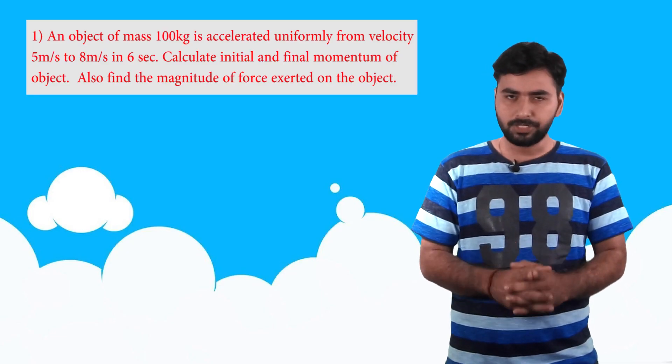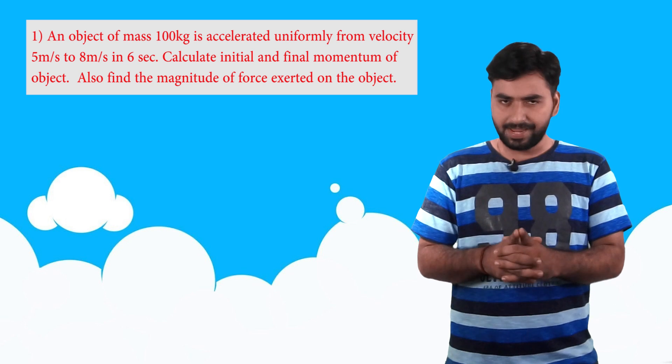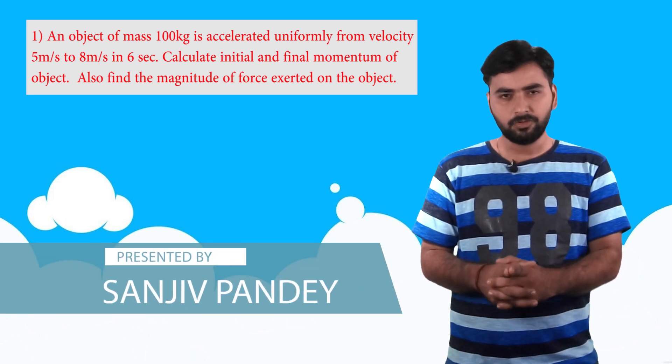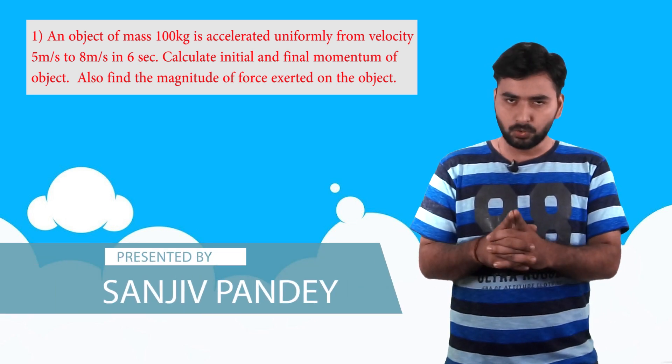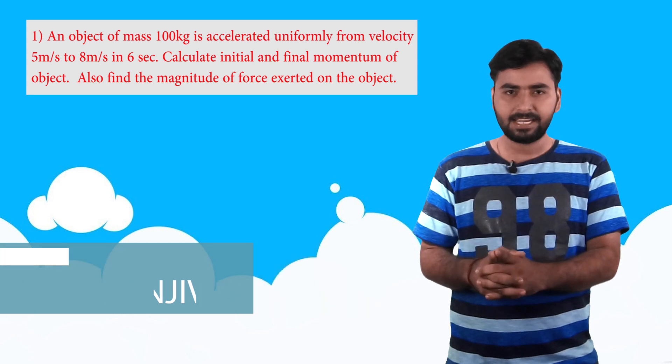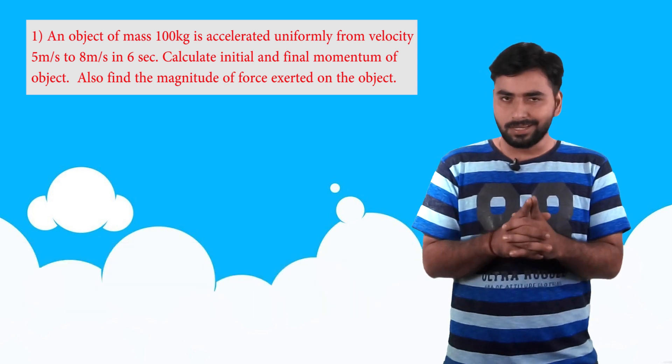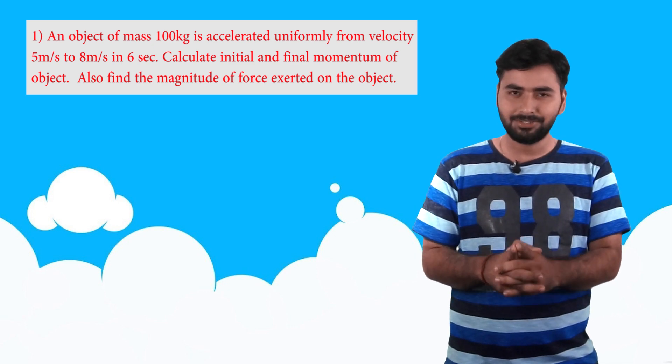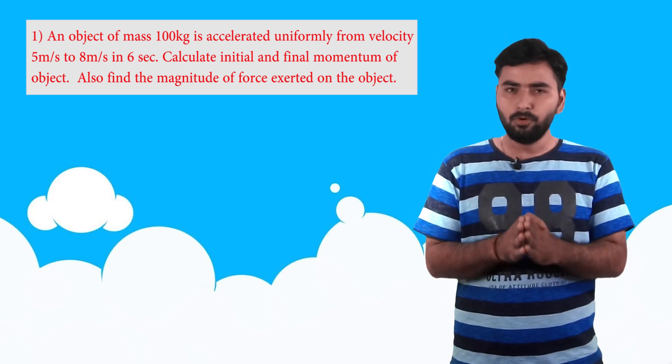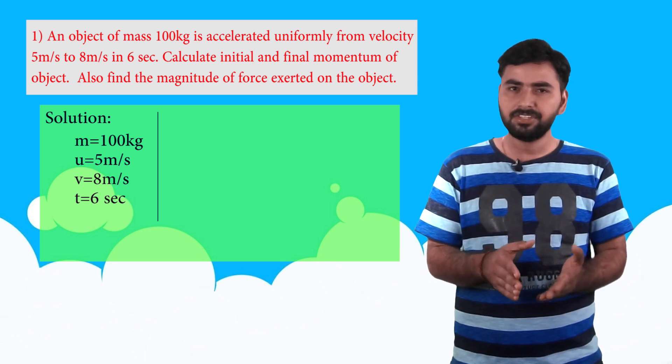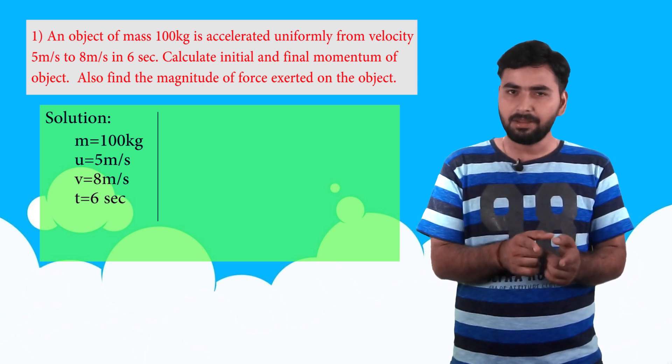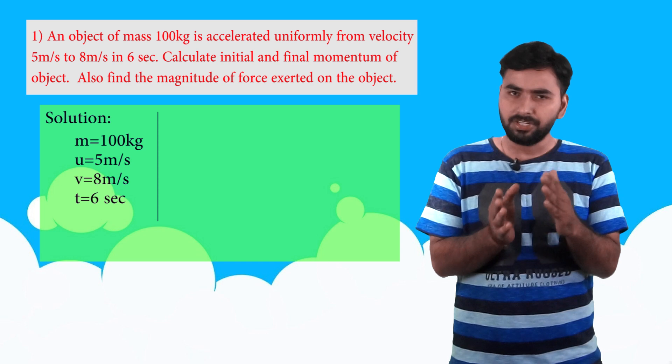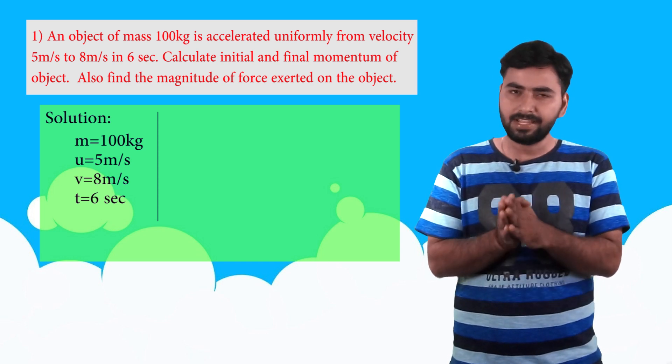And the first question is: an object of mass 100 kg is accelerated uniformly from a velocity of 5 meter per second to 8 meter per second in 6 seconds. We need to find the initial and final momentum and also the force exerted on the object. So this question gives us mass 100 kg, initial velocity 5 meter per second, final velocity 8 meter per second and time 6 seconds.